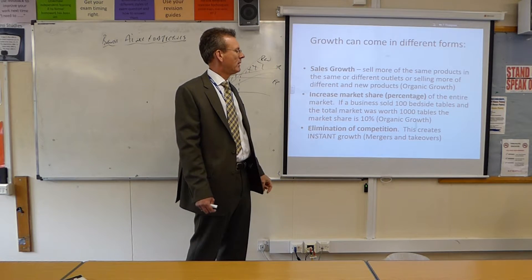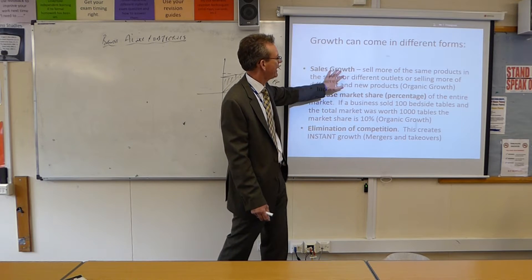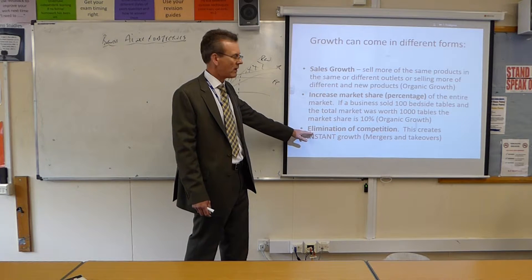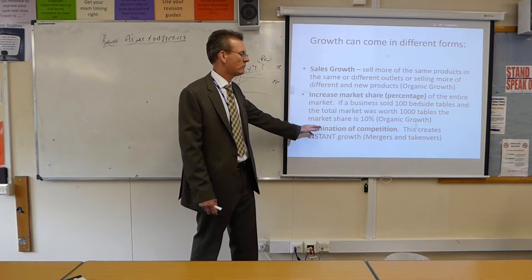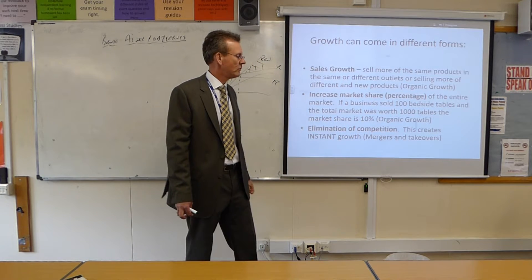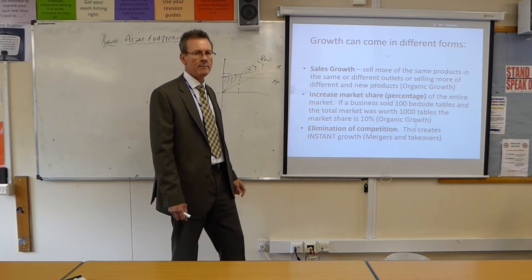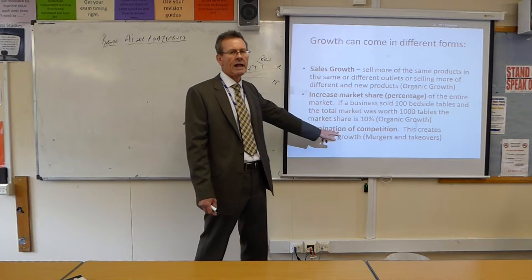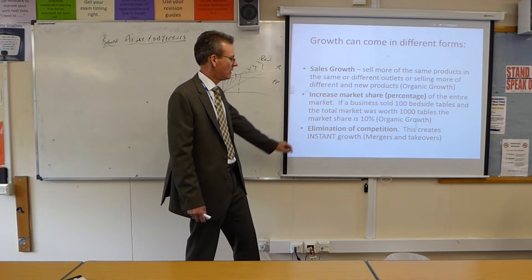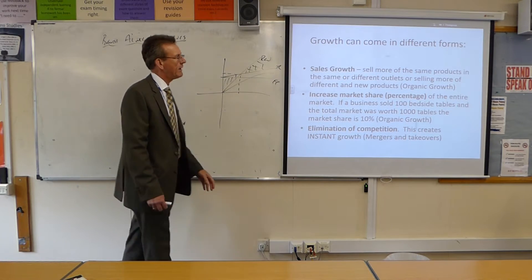You could also increase your market share from 10% to 20%, which would be quite significant over a year. Increasing market share, like sales growth, is another example of organic growth. But the other form of growth comes from elimination of the competition — this is instant growth when you buy other businesses in the marketplace. For example, EE was bought by BT for £13 billion, and BT now have a bigger market share in the mobile phone business. So if you want to grow quickly and have cash, you can buy, merge, and take over other companies — that's instant growth.